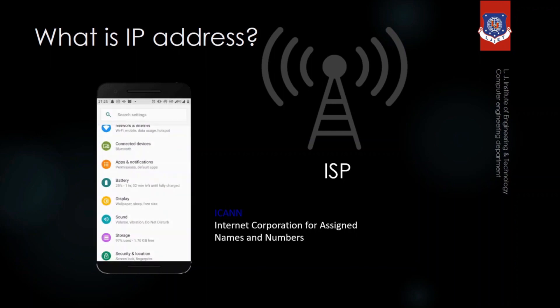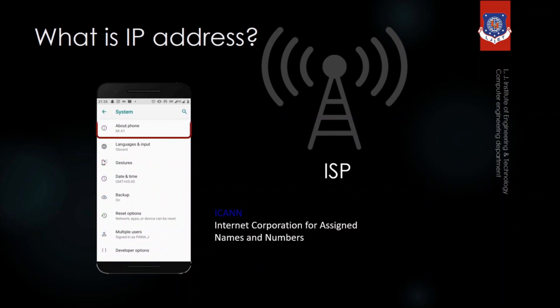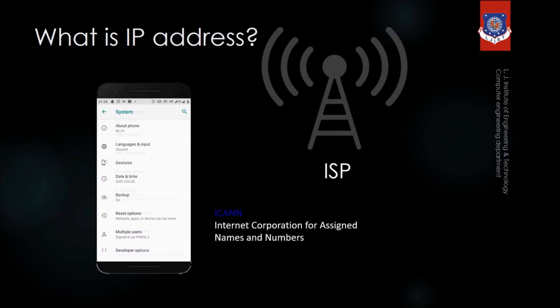You can find your IP address on your phone — just go to Settings, then System, then About Phone, and there you will find the IP address. You may notice there are two IP addresses. Why there are two, we will see that later.